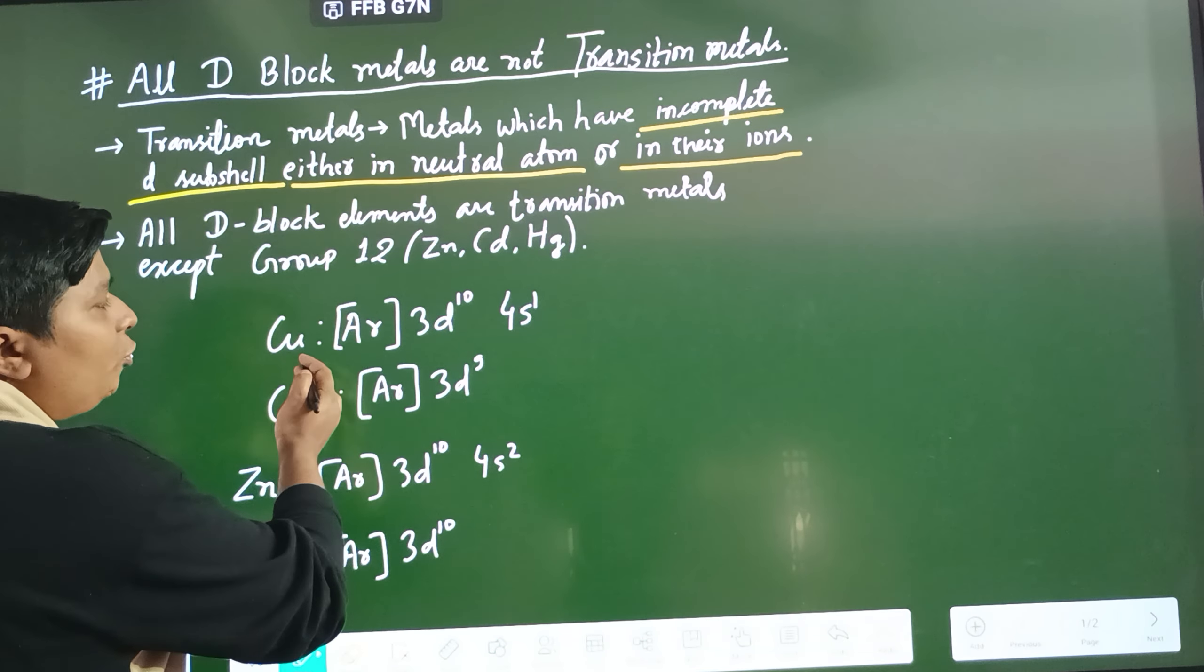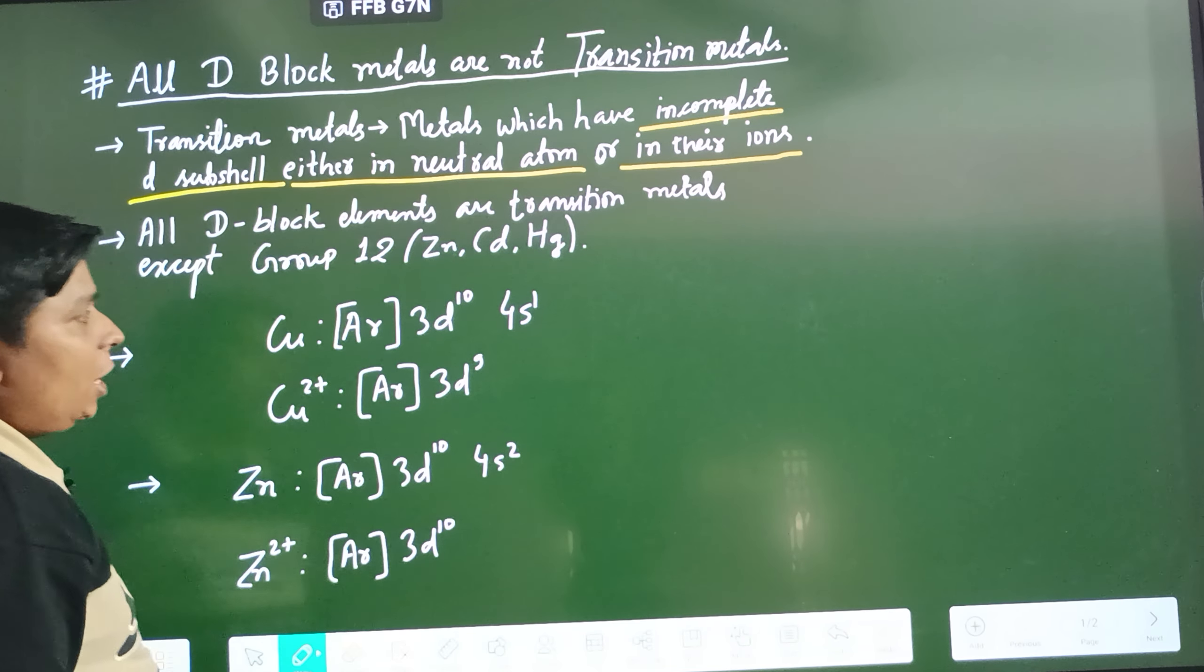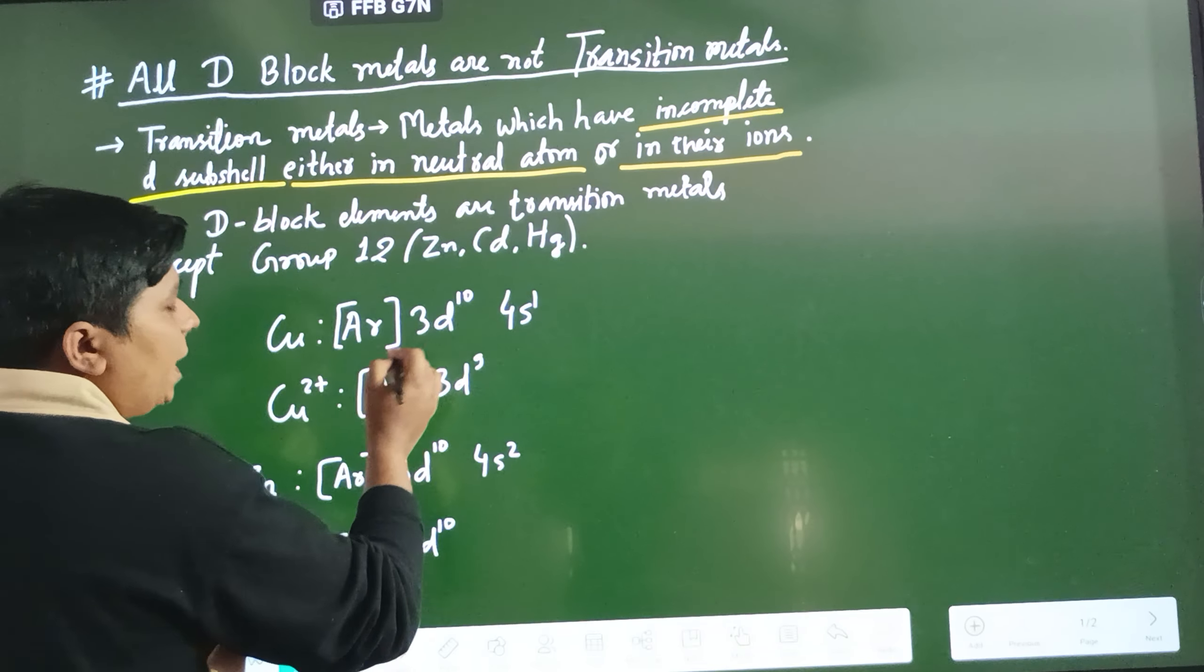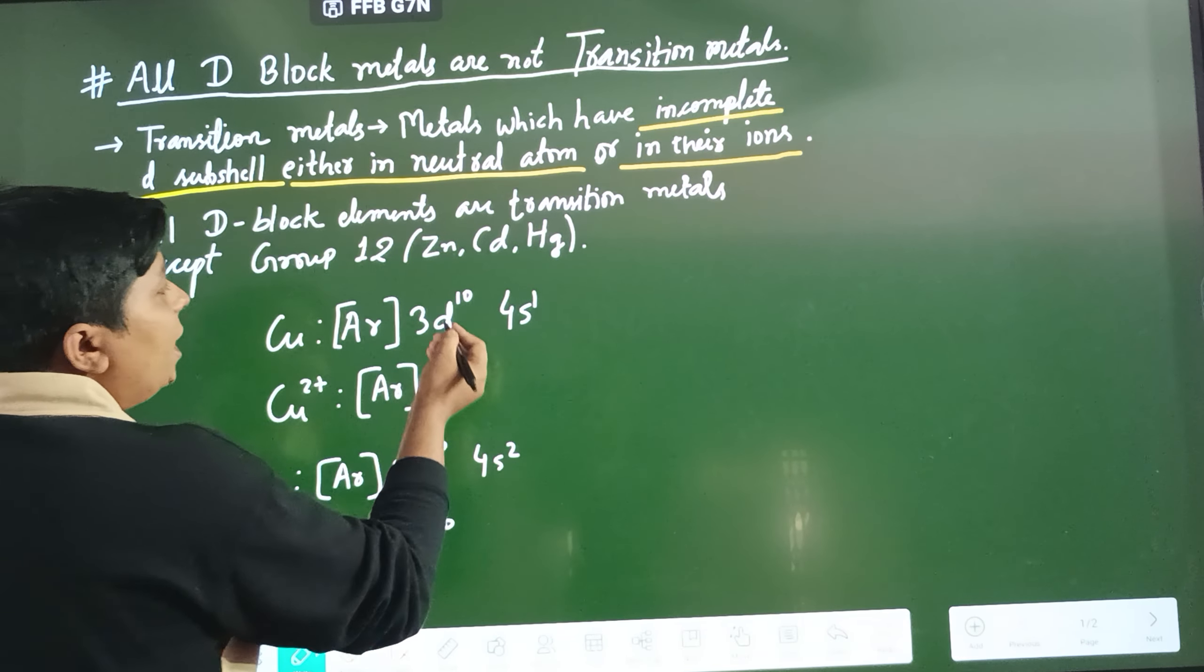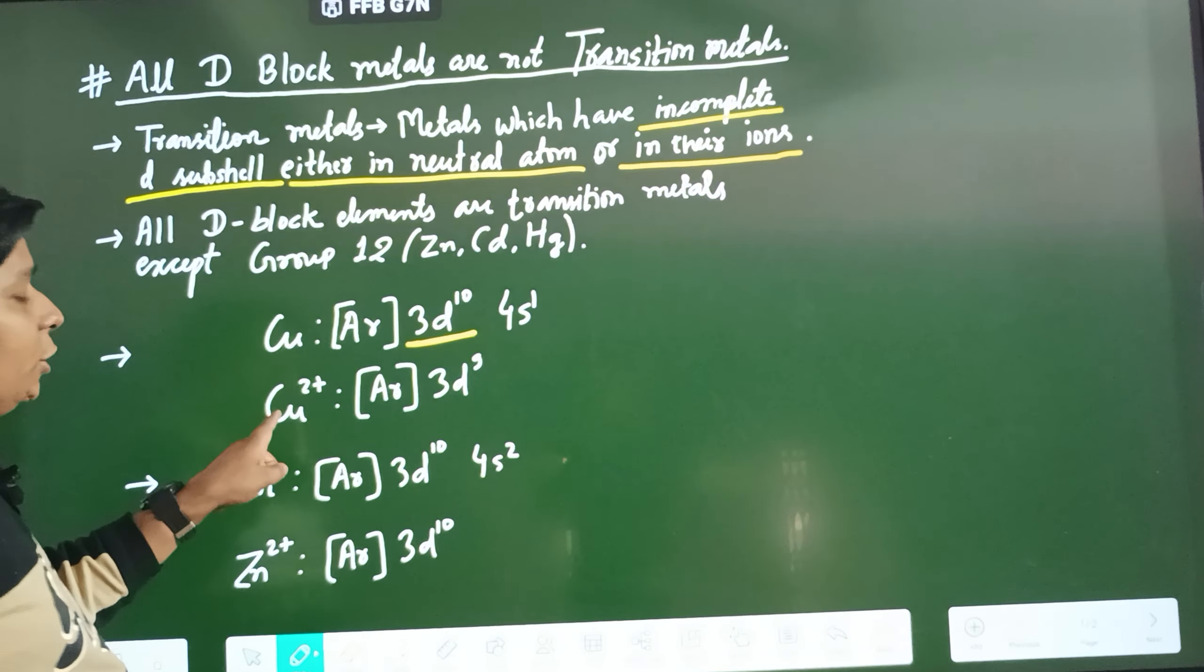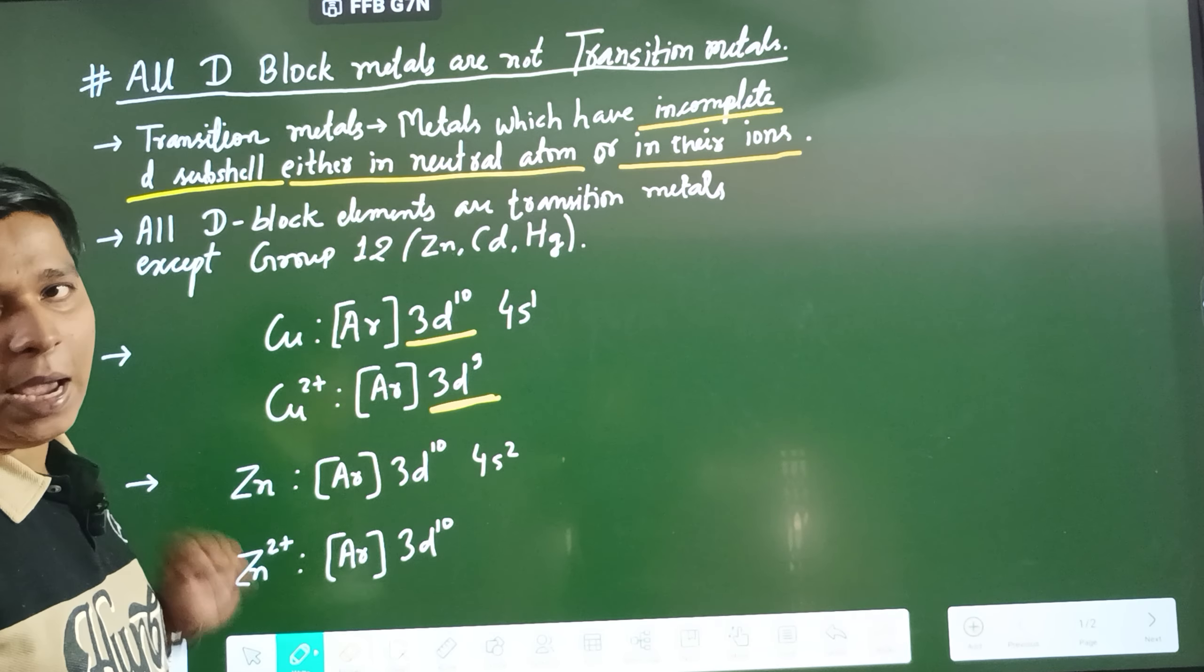Copper in its neutral state has electronic configuration argon 3d10 4s1. As you can see, in its neutral state it doesn't have an incomplete D-subshell. It is fully filled. But in its Cu2+ form, it has an incomplete D-subshell 3d9.